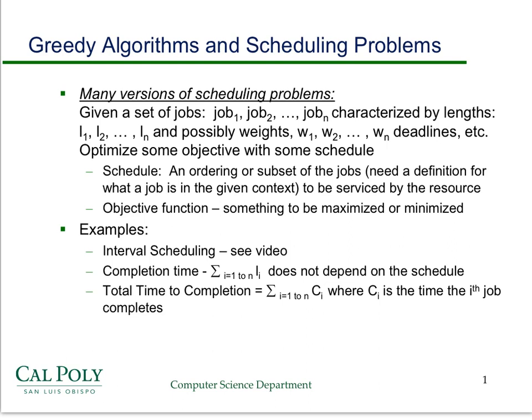We've already seen one version of this in a previous video on interval scheduling. In that problem, each job was characterized by its start time and end time. We had a single processor and wanted to maximize the number of non-overlapping jobs. We used a stay-ahead argument to prove the greedy algorithm ordering jobs by earliest finish time first was correct.